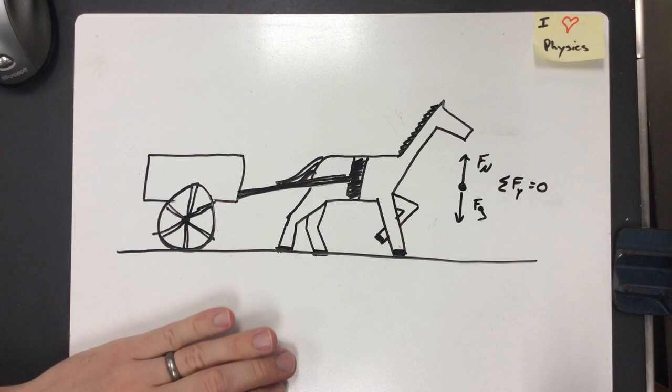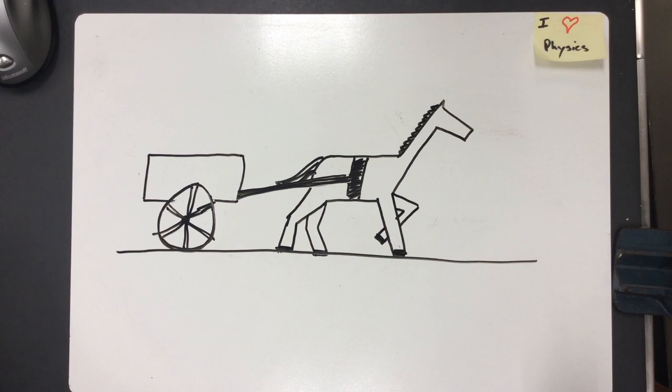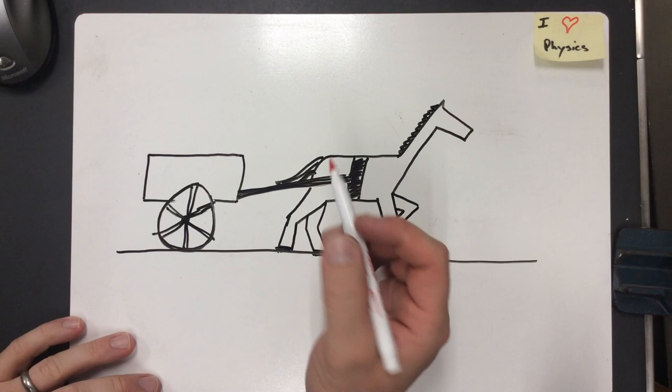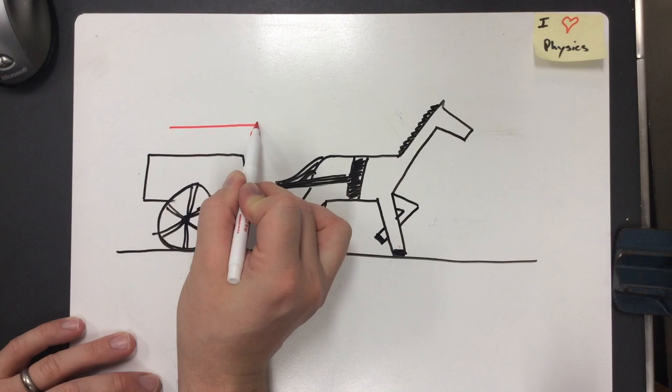What we're going to be concerning ourselves with is the horizontal forces, because when you learn about Newton's third law, what we're first figuring out is that we know that all forces happen in pairs. And for every action force, there has to be an equal and opposite reaction force.